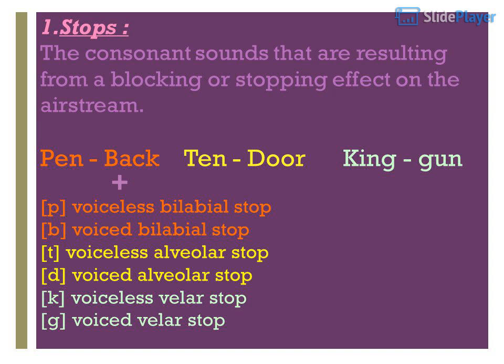Example words: pen, back, ten, dorking, gun. P — voiceless bilabial stop. B — voiced bilabial stop. T — voiceless alveolar stop. D — voiced alveolar stop. K — voiceless velar stop. G — voiced velar stop.